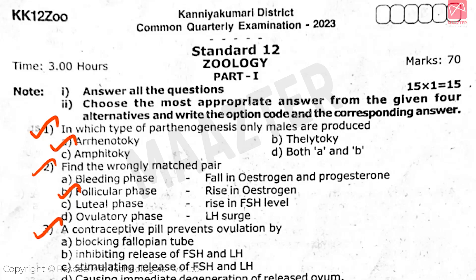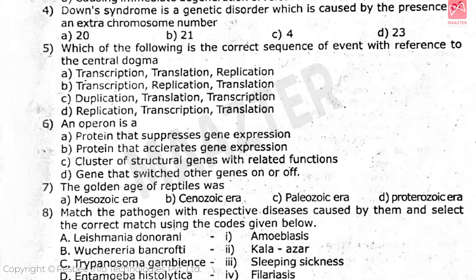Question 3: A contraceptive pill prevents ovulation by — the answer is option B. Question 4: Down syndrome is a genetic disorder caused by the presence of an extra chromosome number — the answer is option B.